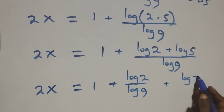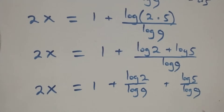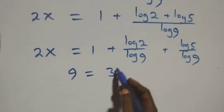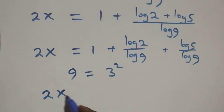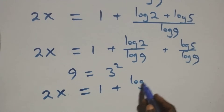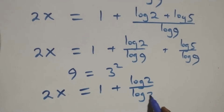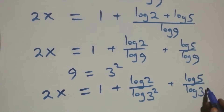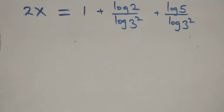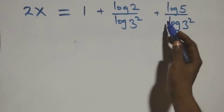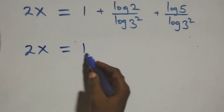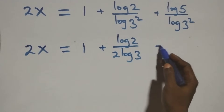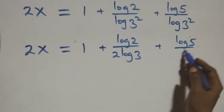Then, next step here, we can express 9 as 3 times 3, that's 3 squared. What we have now becomes 2x equals 1 plus log 2 over log 3 squared plus log 5 over log 3 squared. Then, applying the power rule of logarithm, the 2 in the exponent comes down, and we have 2x equals 1 plus log 2 over 2 log 3 plus log 5 over 2 log 3.